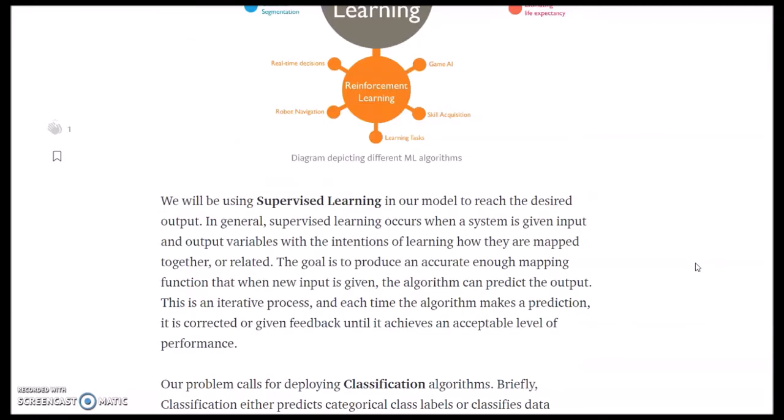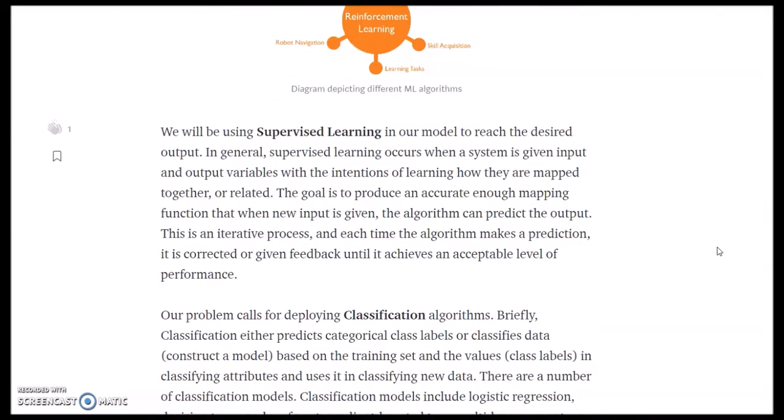We will be using supervised machine learning. In general, supervised learning occurs when a system is given input and output variables with the intention of learning how they are mapped together. The goal is to produce an accurate mapping function so when new input is given, the algorithm can predict the output. This is an iterative process and each time the algorithm makes a prediction, it is corrected or given feedback until it achieves an acceptable level of accuracy.